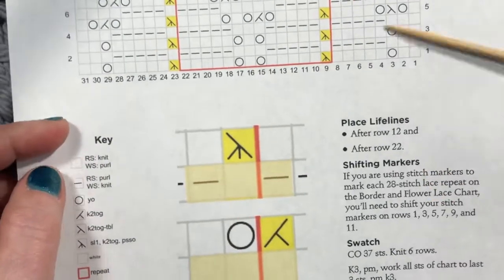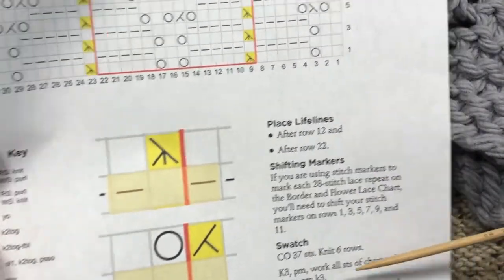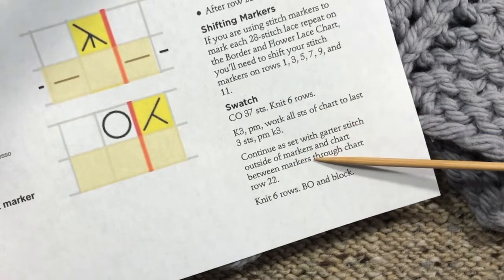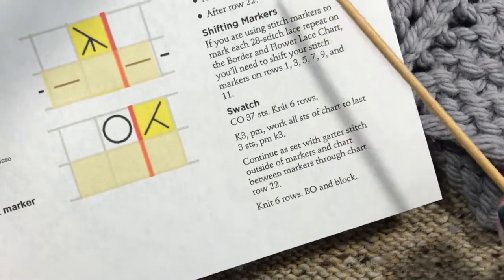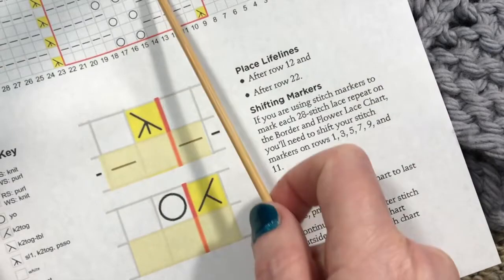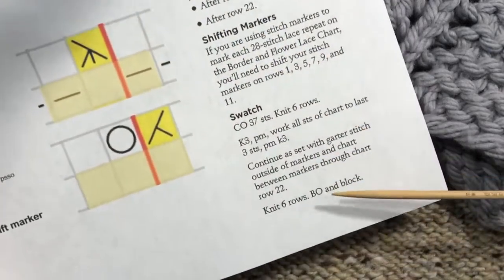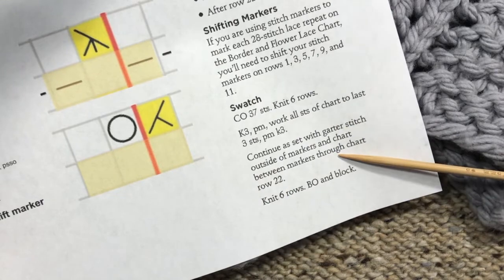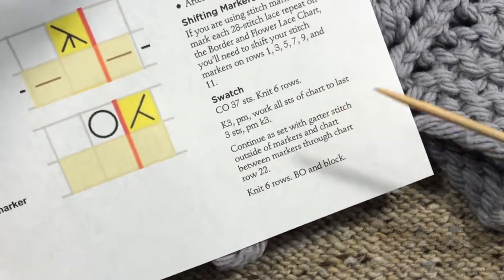Okay, now before we cast on, I want you to do a swatch. So I've got some instructions for exactly how to do the swatch here. We're going to cast on 37 stitches. We're going to knit the first part of this chart for the border, and you're going to try one of the cast ons that I have in the separate video and see if it's nice and stretchy.